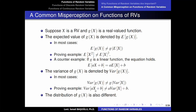The distribution of g(X) is also different. For example, when X is an exponential random variable and g is a function, transforming this exponential random variable may produce a totally different random variable. The function of that random variable may not be exponentially distributed. So we need to identify the expectation, the variance, and the distribution of a function of a random variable — and unfortunately, you cannot simply use these equations. They are not equal.